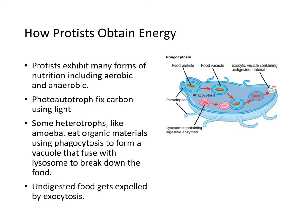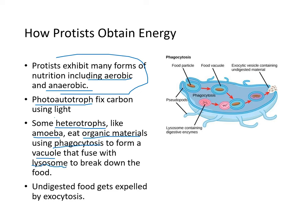Some protists have more than one flagellum, others have cilia, and yet others move by pseudopodia. They exhibit many different forms of nutrition, including aerobic and anaerobic. Photoautotrophs fix carbon using light. Some heterotrophs like amoeba eat organic materials using phagocytosis to form a vacuole that fuses with a lysosome to break down food, then waste is extruded out using exocytosis.